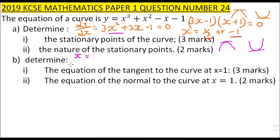Let's check when x equals minus 1. The point to the left of minus 1 is minus 2, so we substitute x = -2 into dy/dx = 3x² + 2x - 1: that gives 3(-2)² + 2(-2) - 1 = 12 - 4 - 1 = 7. The gradient is positive.